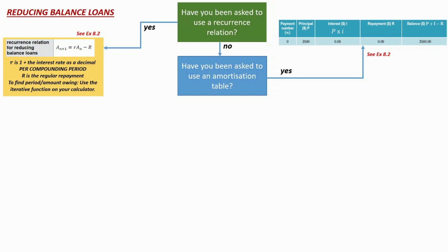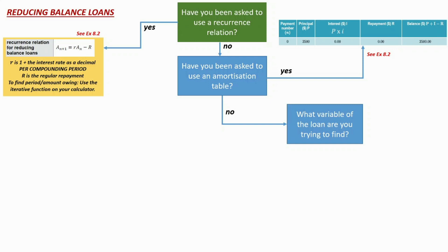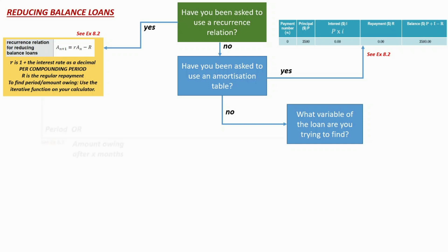The amortization schedule is virtually identical to the recurrence relation — it's just the recurrence relation set up in table form. If you haven't been asked for either, we move on to ask: what variable of the loan do I need to find? If you need to find the period or an amount owing after a certain number of months, you're going to go back to your recurrence relation. Use the iterative function on your calculator — type the information in and press equals repeatedly until you reach the answer you need.